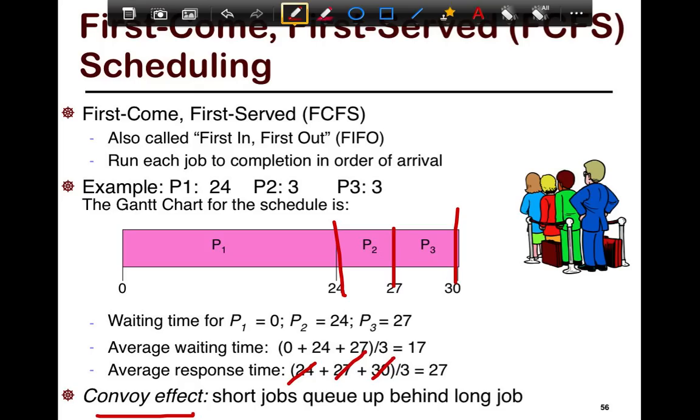Short jobs essentially queue up behind a long job. For example, P3 doesn't even start until 27 and doesn't finish until 30. The problem is that both P2 and P3 are queued up behind P1, which is a really long job, disproportionately long. P1's 24 seconds and P2 and P3 are 3 seconds, right? So 8 times longer. They don't get to start until a really long time. So your average response time is really high or is based on if there's long running tasks in the system or not.